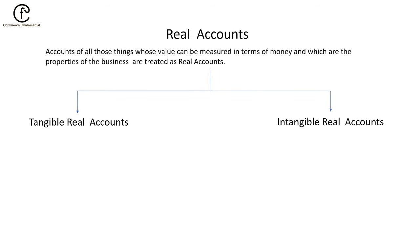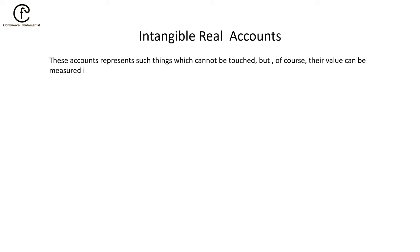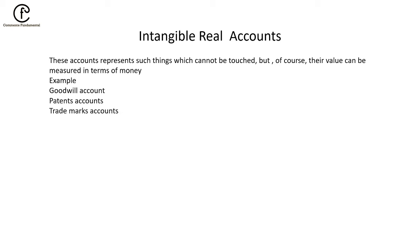Intangible Real Accounts represent things which cannot be touched, but their values can be measured in terms of money. For example, goodwill, patent accounts, trademark accounts, copyright accounts, etc. These are all intangible real accounts — things we cannot physically touch.